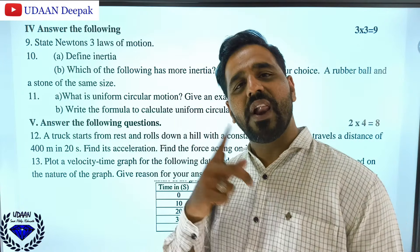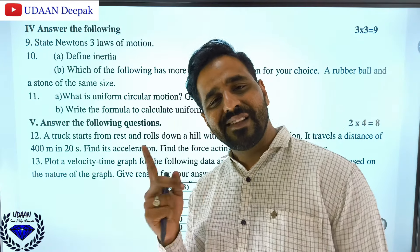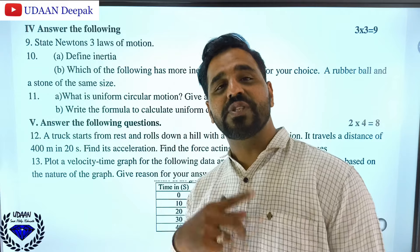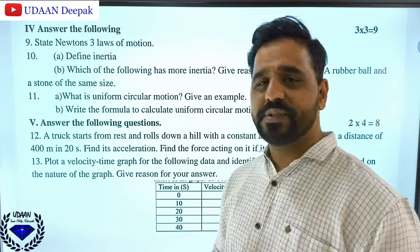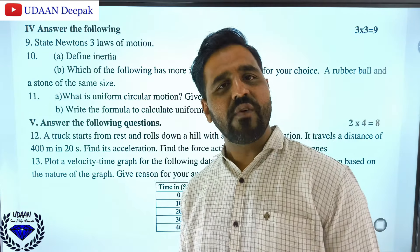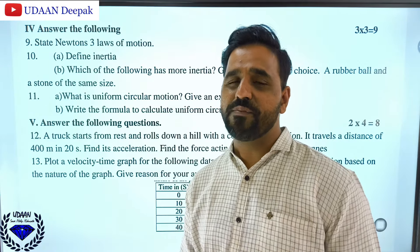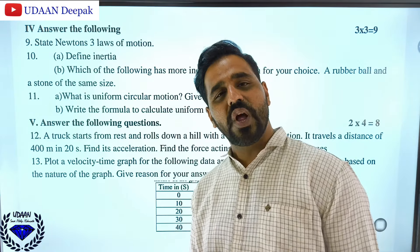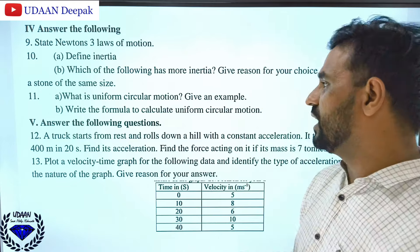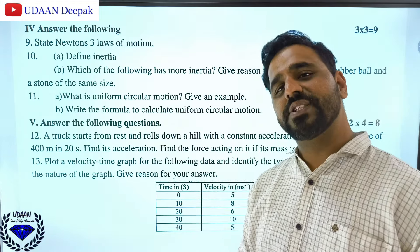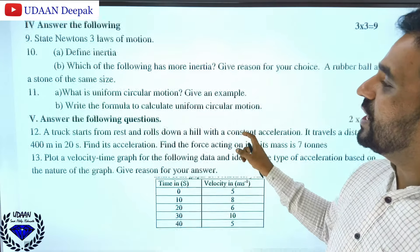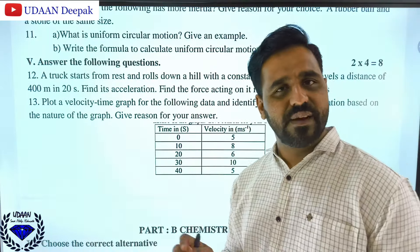What is uniform circular motion? The motion along which an object moves in a circular path with constant speed or constant acceleration is called uniform circular motion. Examples include the movement of Earth around the sun and the moon around Earth. The formula is half mv squared or v squared by r.